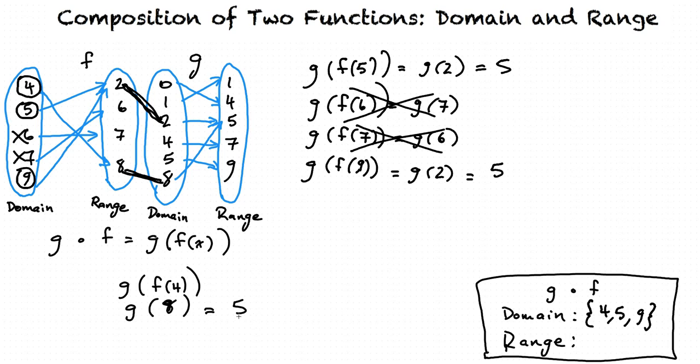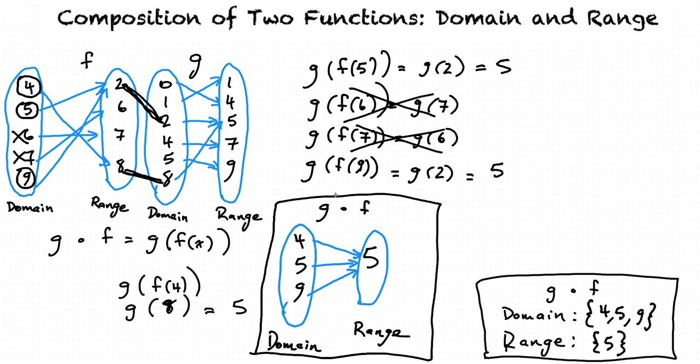So we've got 5 for each of these, which means there's only one value in the range: 5. This is our final answer. Our domain of g of f is 4, 5, and 9, and our range is 5. So if we wrote out g of f the way we wrote our original f and g here, we see our combined function with our domain written on the left and our range written on the right. Each value in the domain maps out to that one range value of 5.